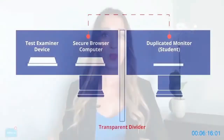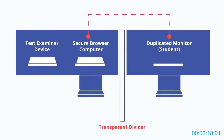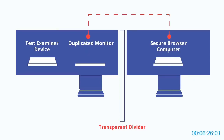For one-on-one testing, this setting is laid out on two tables separated by a transparent divider. On one side of the divider, the test examiner's device runs the test administrator interface with an attached monitor. On the other side of the divider, the student has a monitor that duplicates the same content.